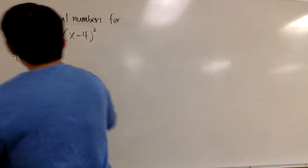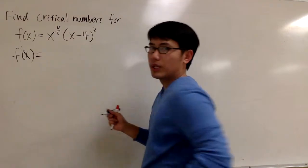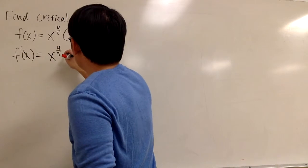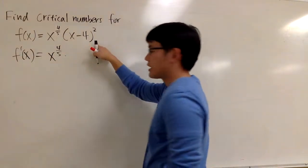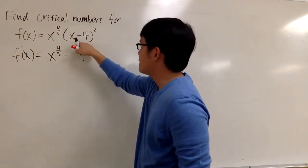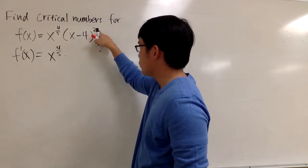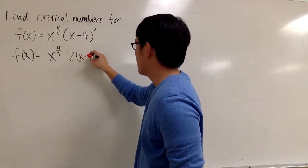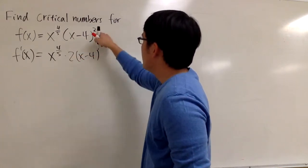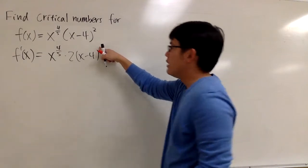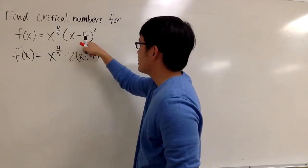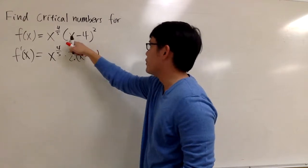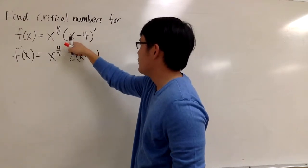f prime of x. This is a product of two things, so we have to use the product rule. I will keep the first function, x to the 4/5, times the derivative of the second. We have something to the second power. So for the derivative, I have to bring the 2 to the front and keep the inside, so I have the (x minus 4). 2 minus 1 is 1, so it doesn't matter. And then as a good habit, you should look inside of the parentheses to see what you have. Because of the chain rule, you have to take the derivative of the inside.